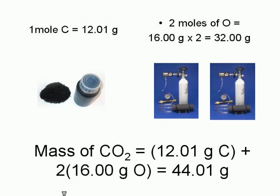Therefore, the total mass of atoms in one mole of carbon dioxide is equal to the mass of one mole of carbon, 12.01 grams, plus the mass of two moles of oxygen. That's two times 16.00 grams, or 32.00 grams. All of these add up to 44.01 grams.